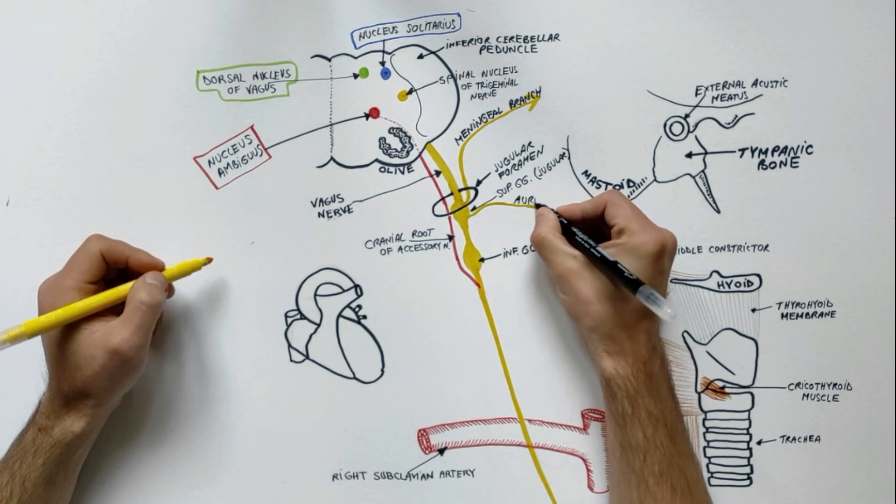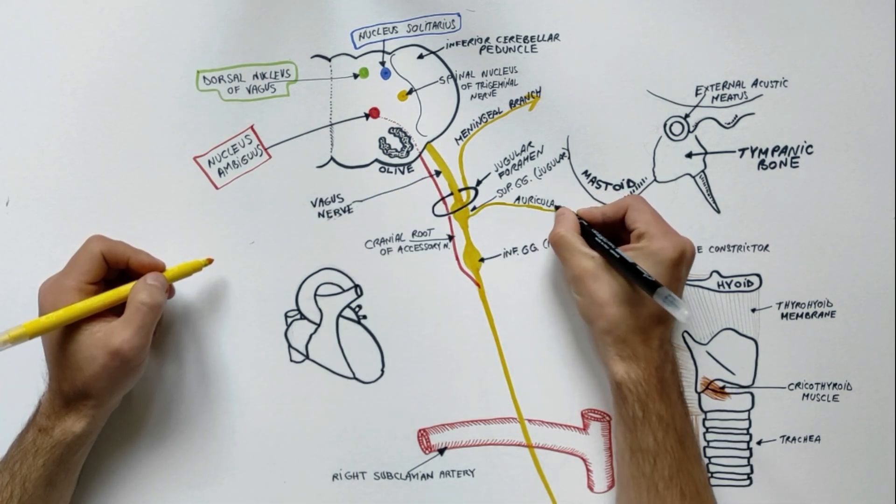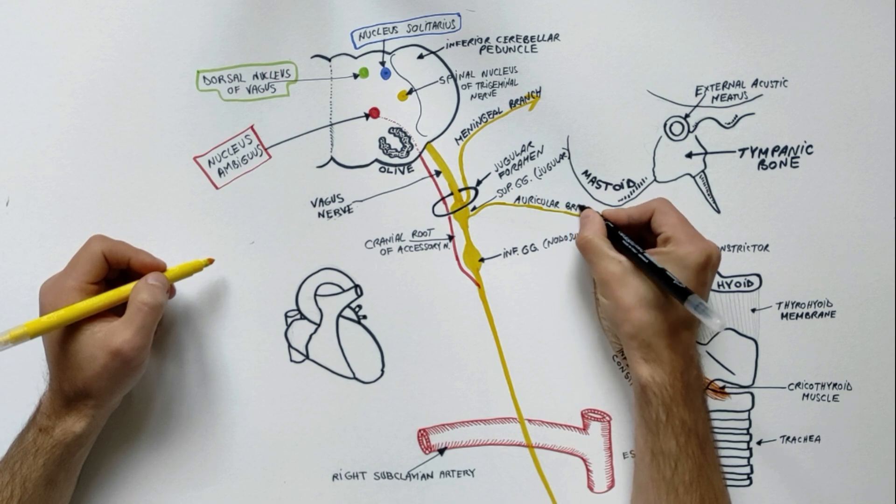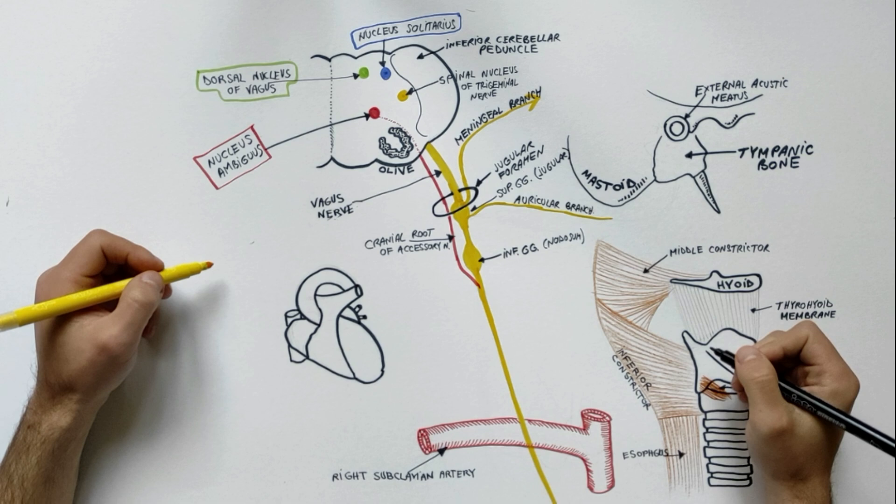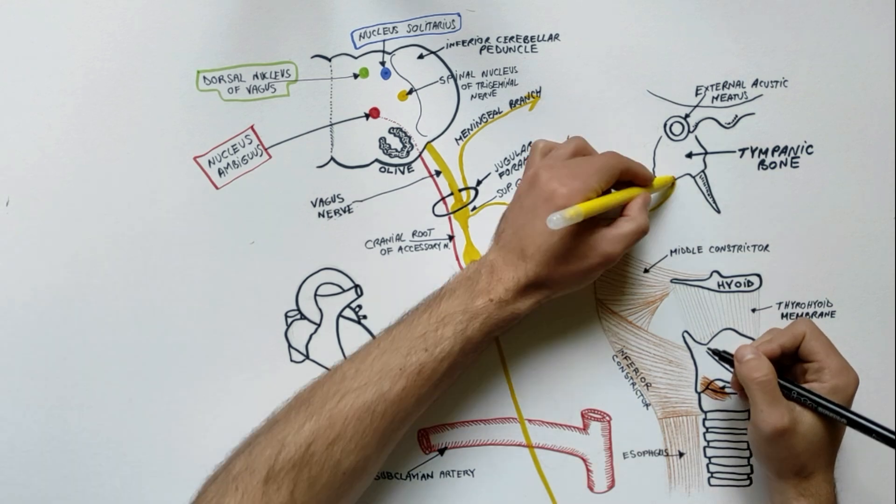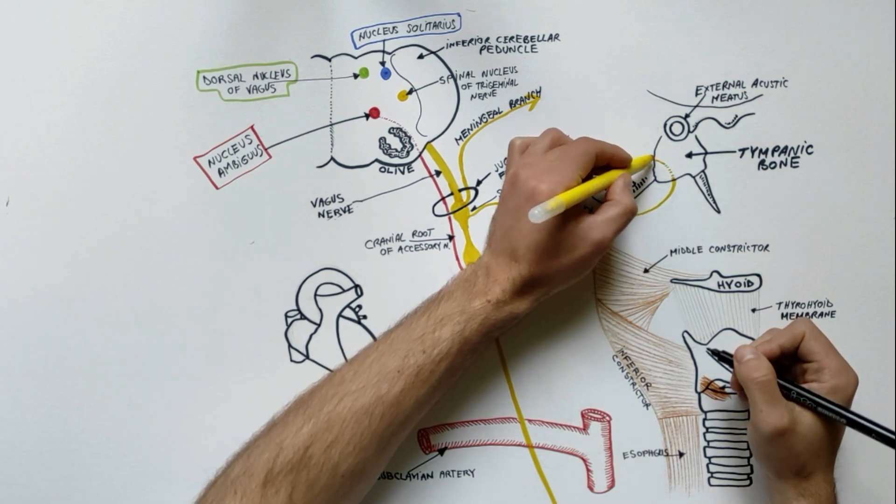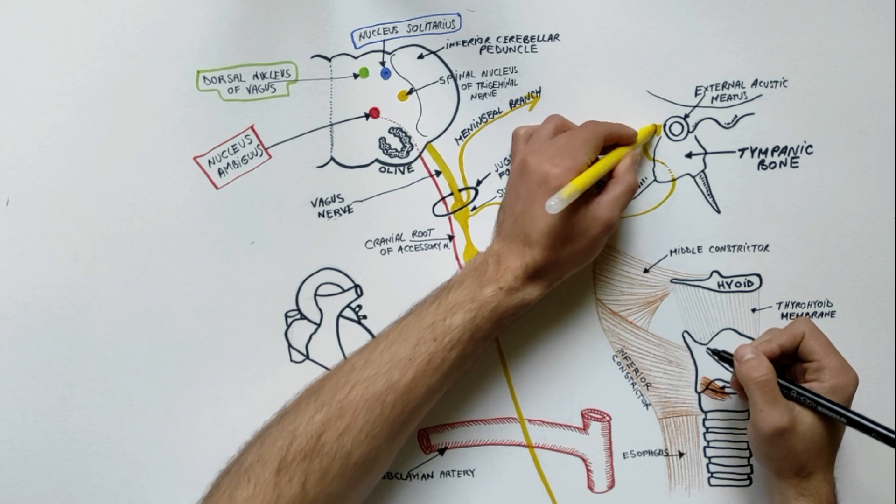The auricular branch or the nerve of Arnold arises from the superior ganglion, enters the mastoid canaliculus on the lateral wall of the jugular fossa.